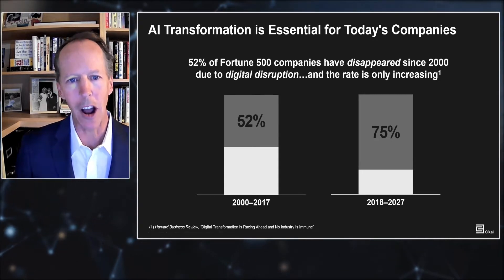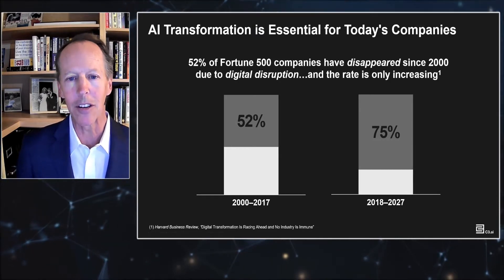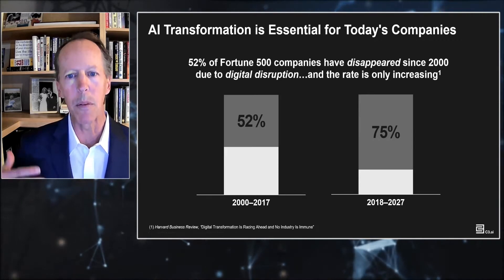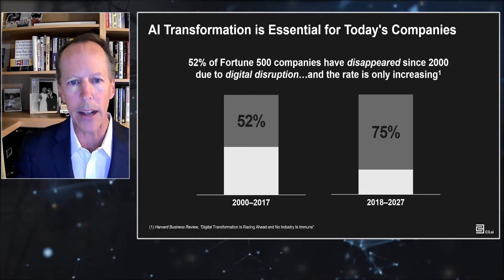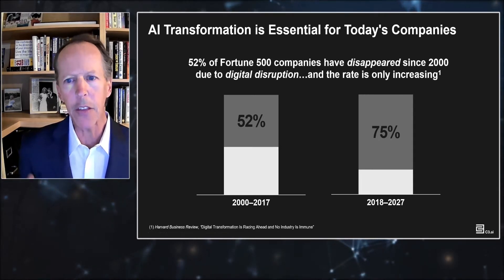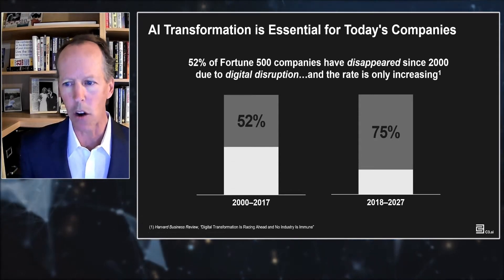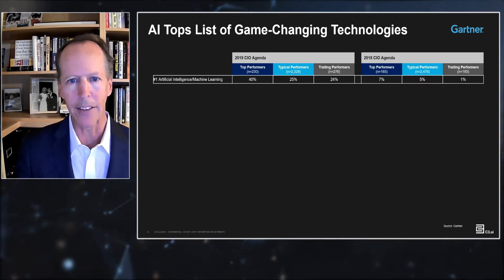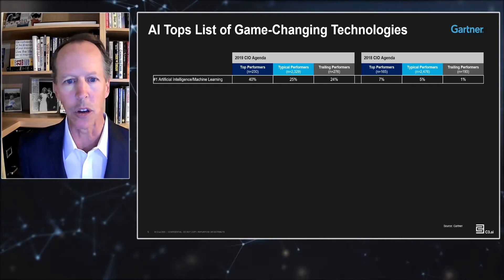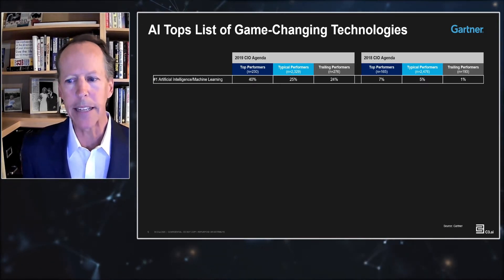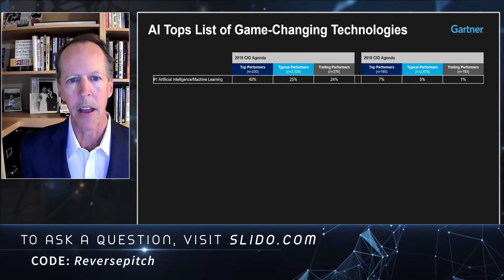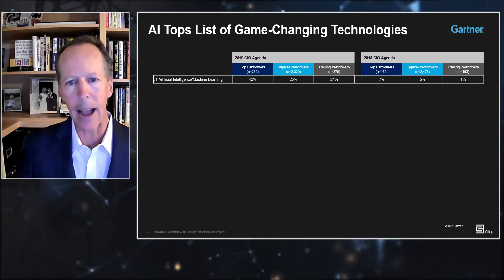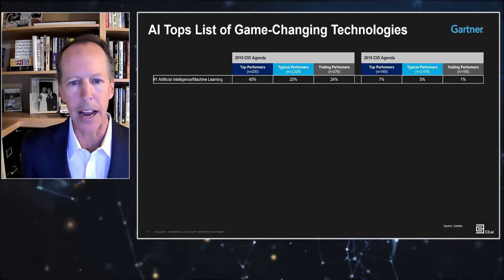If you look at S&P 500 companies over the last 20-30 years, if you don't transform, you die — you merge or go out of business. Business cycles are transpiring so quickly that companies always need to be innovating, and the innovation arena of today is applying artificial intelligence. A Gartner insight shows how fast AI is emerging: in 2018, only 7% of CIOs thought AI was a top concern, and a year later it was 40%.